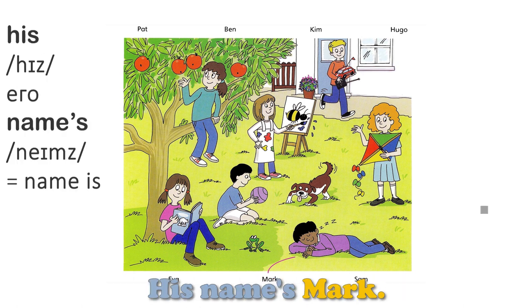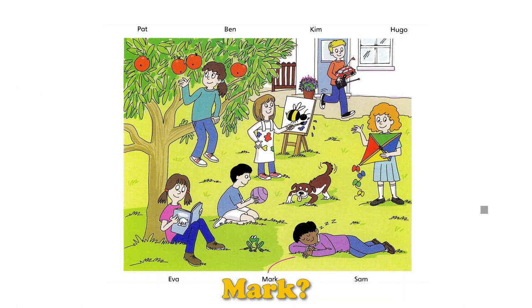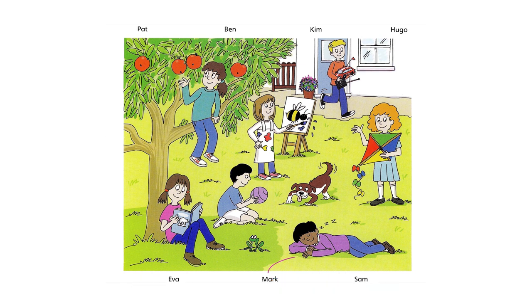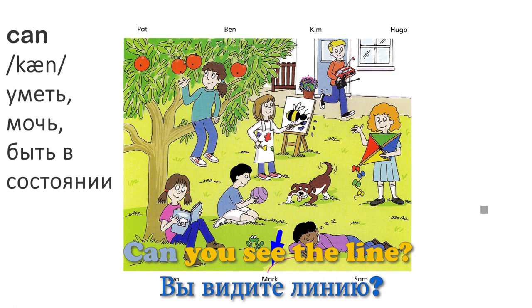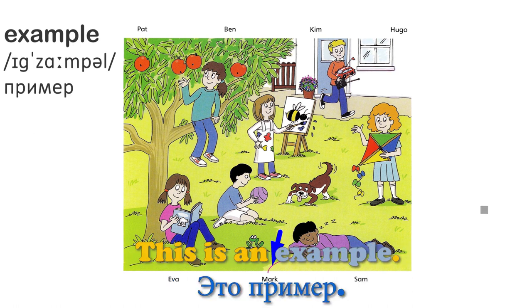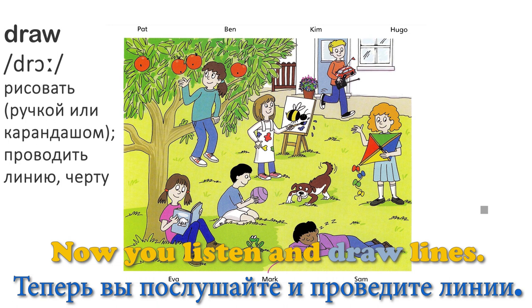His name's Mark. Mark? That's a nice name. Can you see the line? This is an example. Now you listen and draw lines.